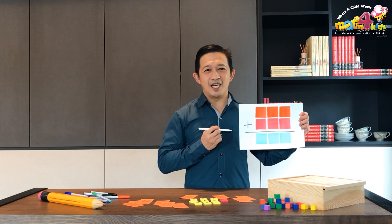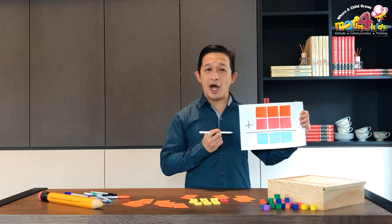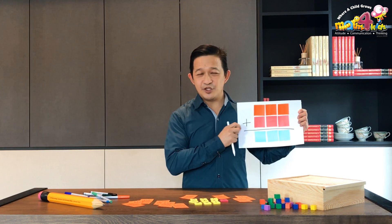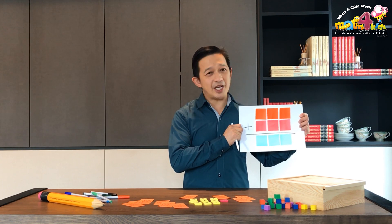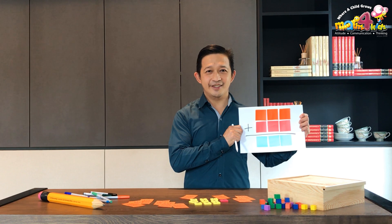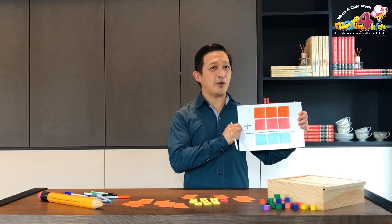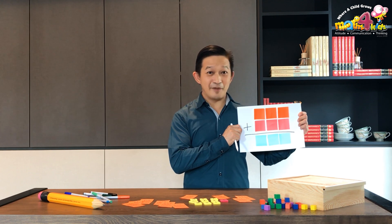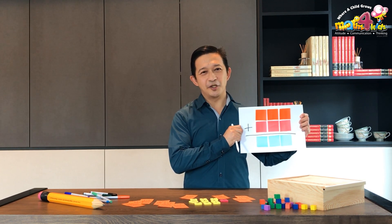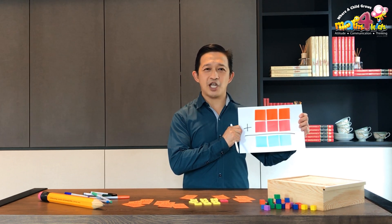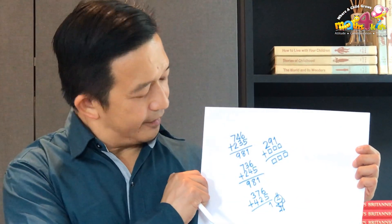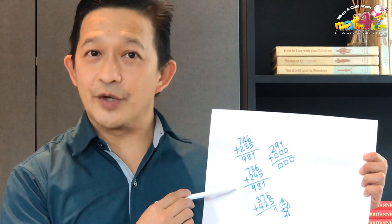In the problem of arranging digits one to nine in the nine spaces to make a correct addition equation, how many equations did you manage to get? One equation, two equations, maybe even more? If you find today's lesson easy, you can challenge yourself. One way to challenge ourselves is to ask questions like this. For the sum of 981, we already managed to get two different equations. How many different equations are possible for that particular sum?